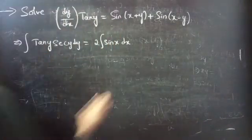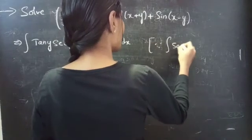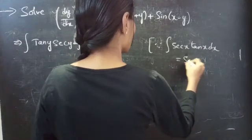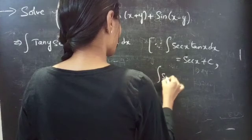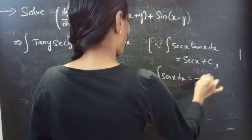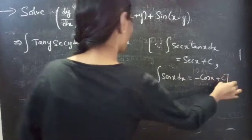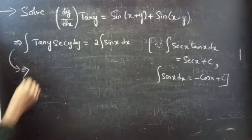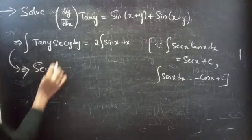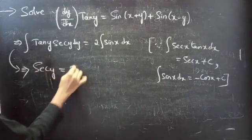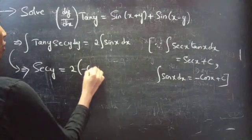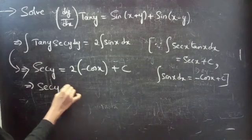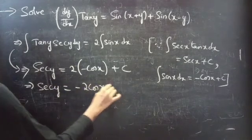We know that the integral of sec(x)·tan(x) dx = sec(x) + C, and the integral of sin(x) dx = −cos(x) + C. Applying these, the left side gives sec(y) and the right side gives 2·(−cos(x)), so sec(y) = −2·cos(x) + C.